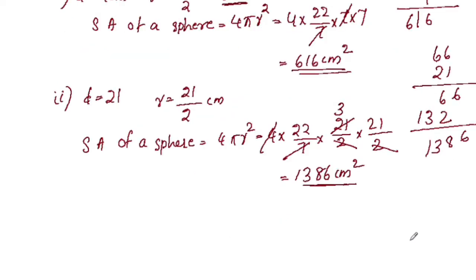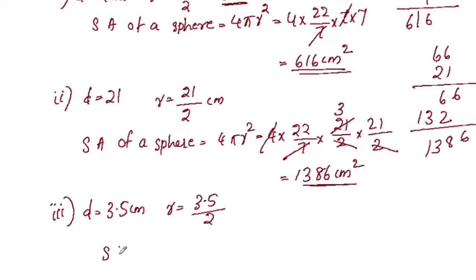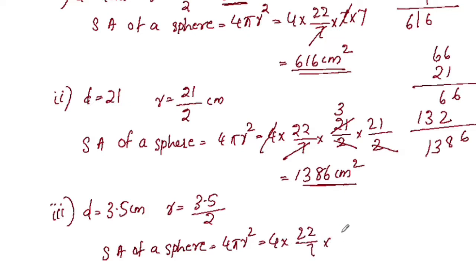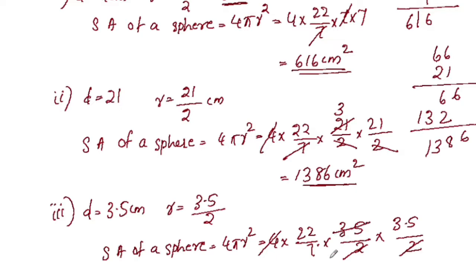This part: d is equal to 3.5 cm. So r is 3.5 by 2. Surface area of a sphere is equal to 4 pi r squared: 4 into 22 by 7 into r is 3.5 by 2, squared. This is 4 and 3.5 and 7 and 3.5 into 7.